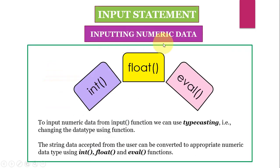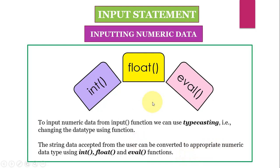Now suppose I want to input numeric data using the input statement. To do that, we can use type casting — that is, we change the data type using a function. This can be done with the help of int(), float(), and eval() functions. The string data accepted from the user via input() is converted to the appropriate numeric data type using these functions.